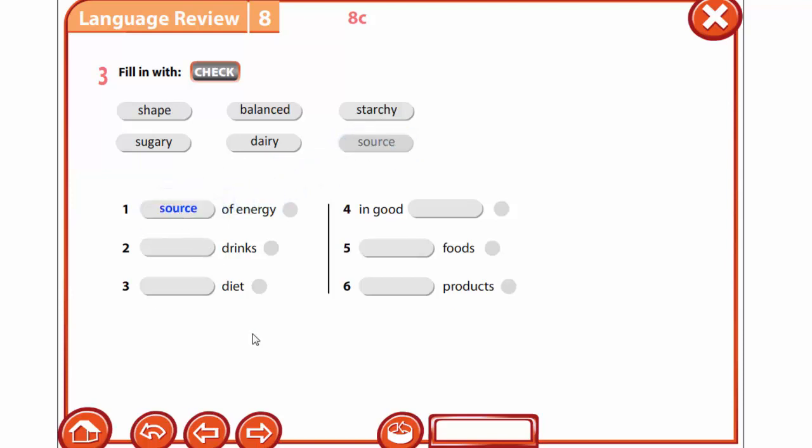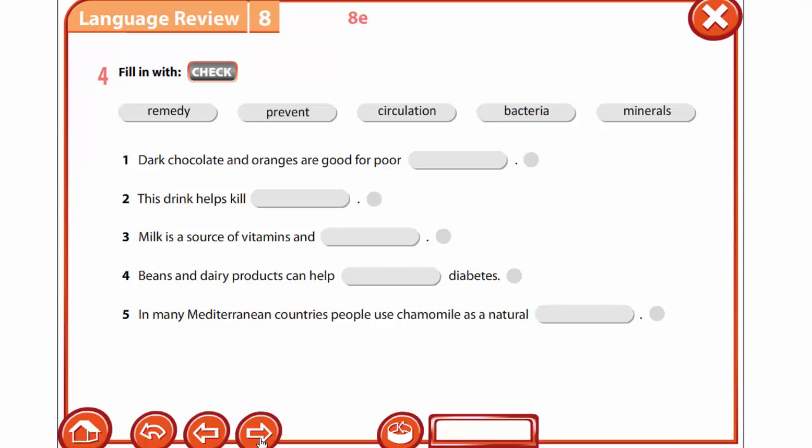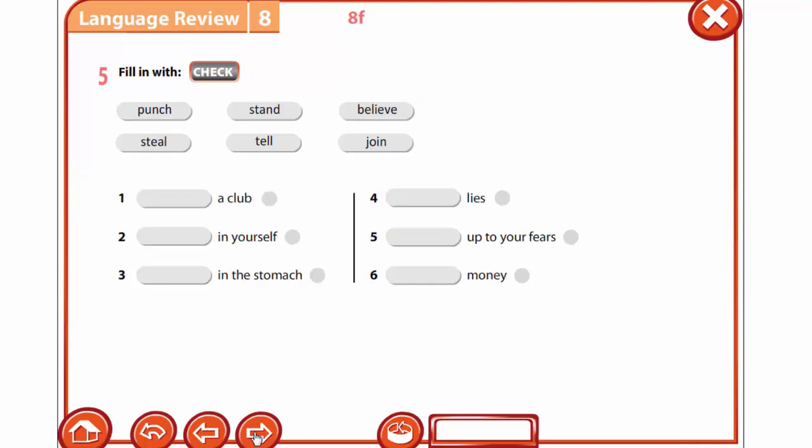...any difficulties doing this exercise, you may open your book to page 92, lesson 8c, and remember 8e. Exercise 4: You are to fill in with remedy, prevent, circulation, bacteria, minerals. Complete the sentences. In Exercise 5, you are...